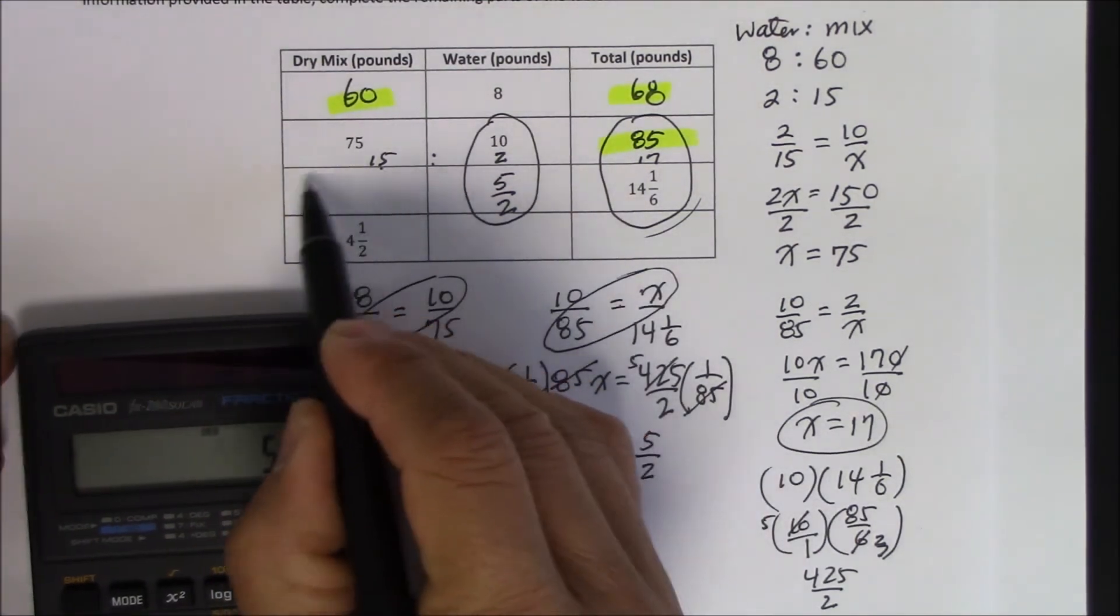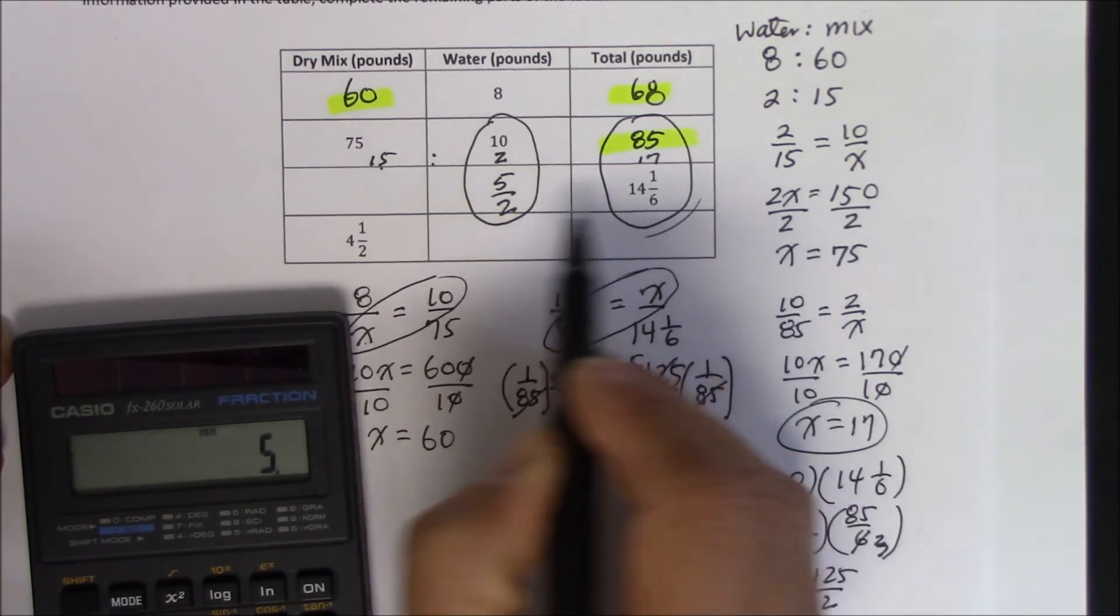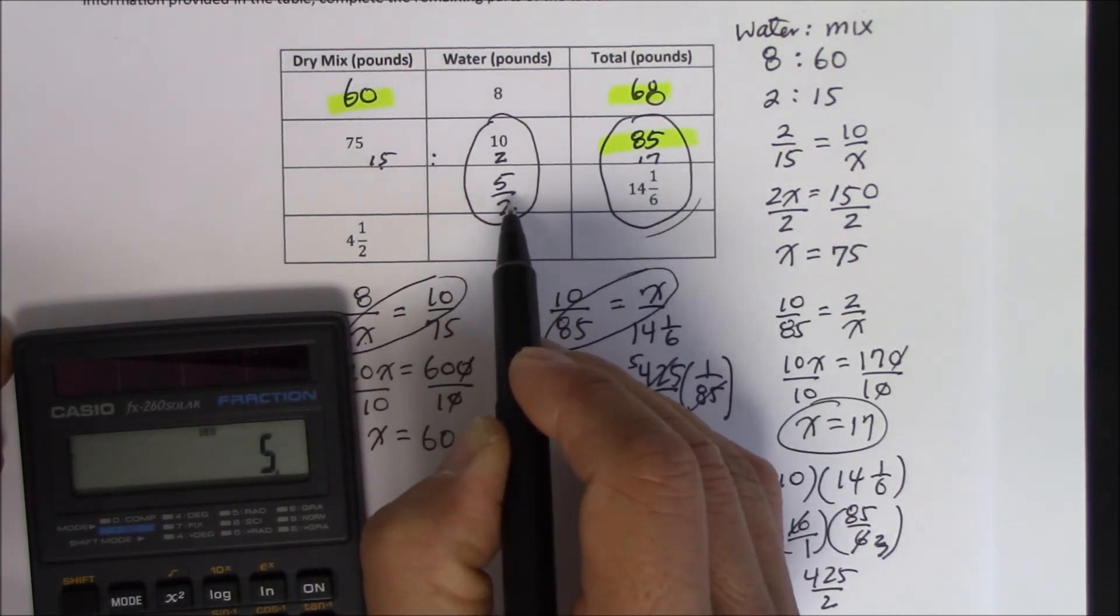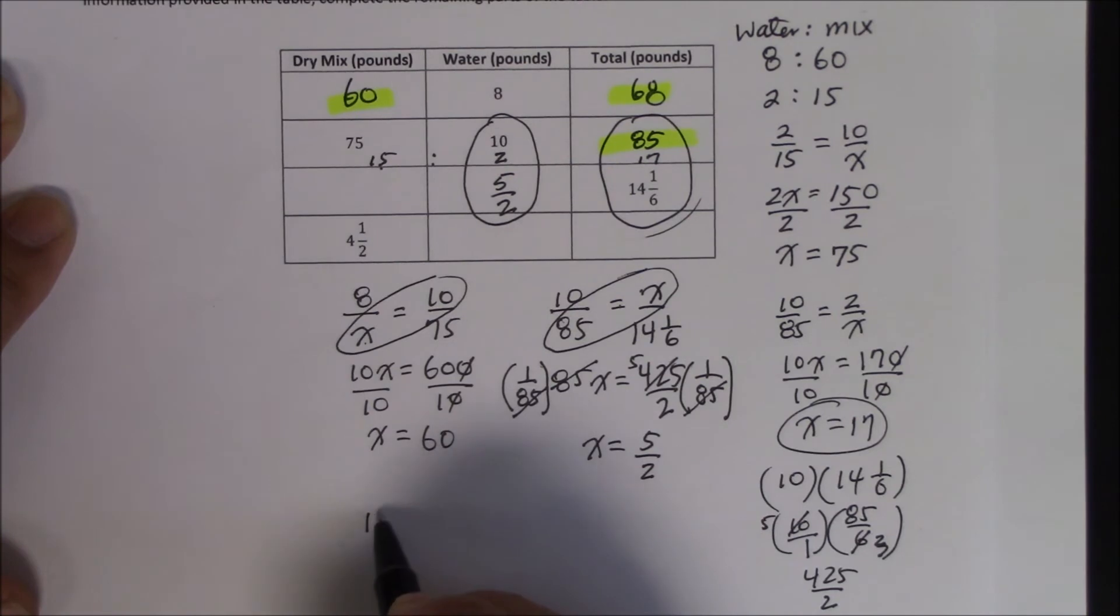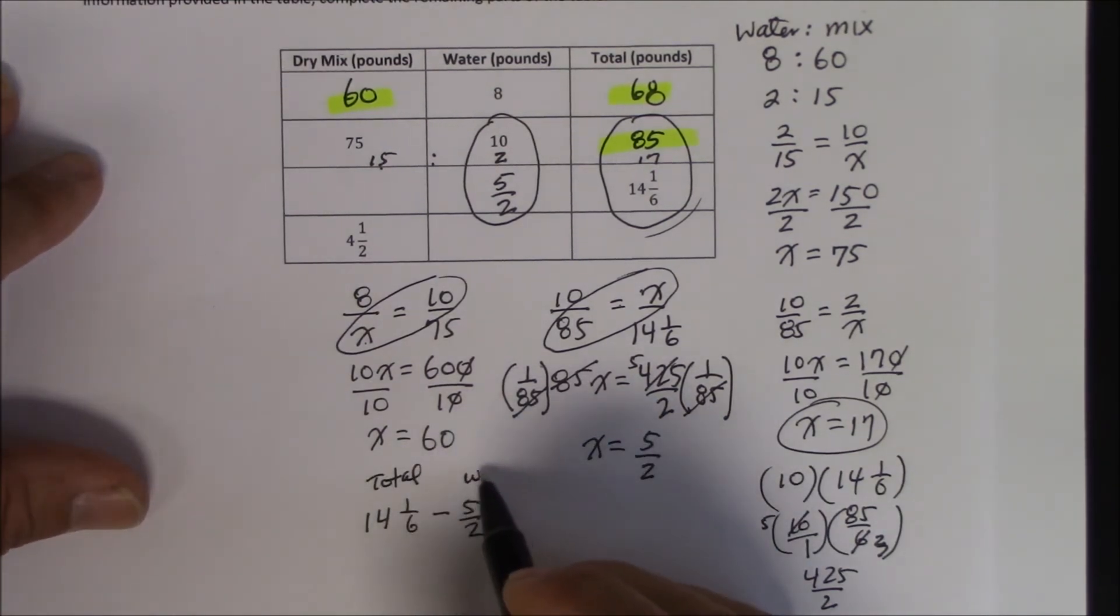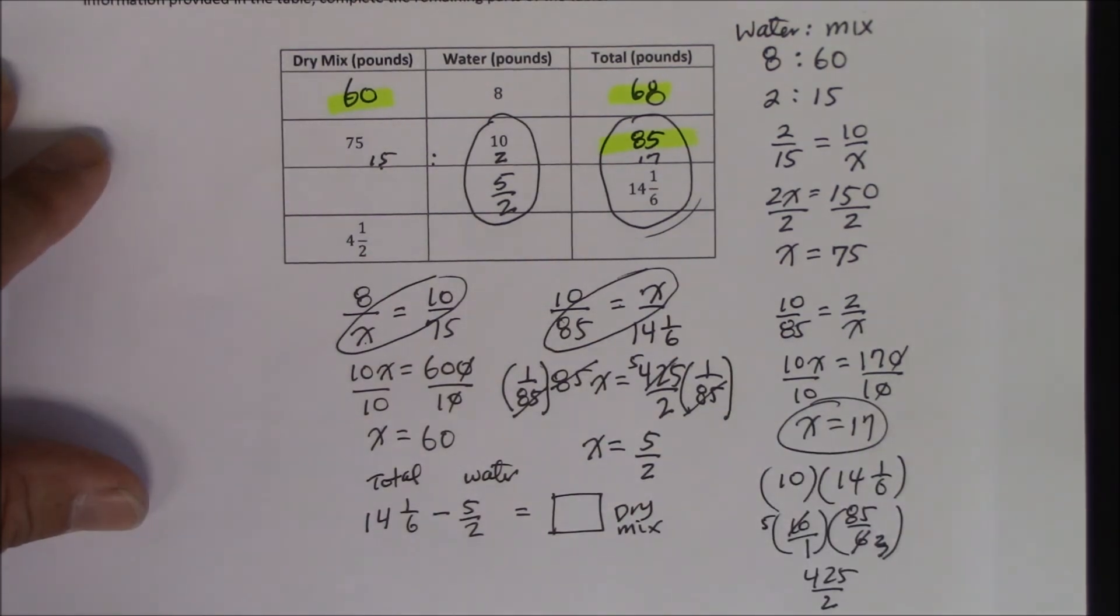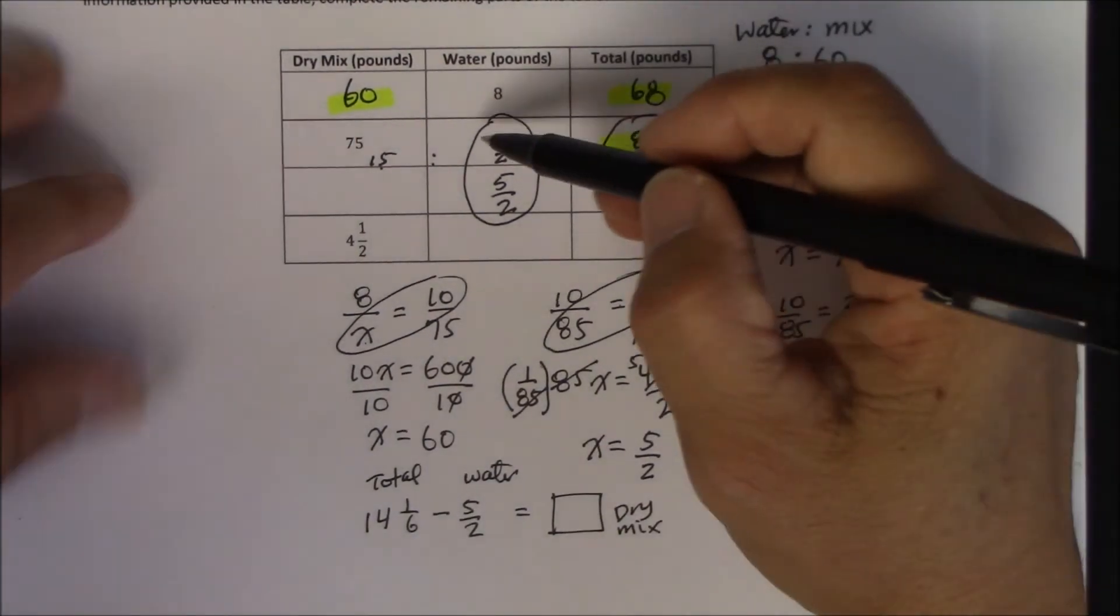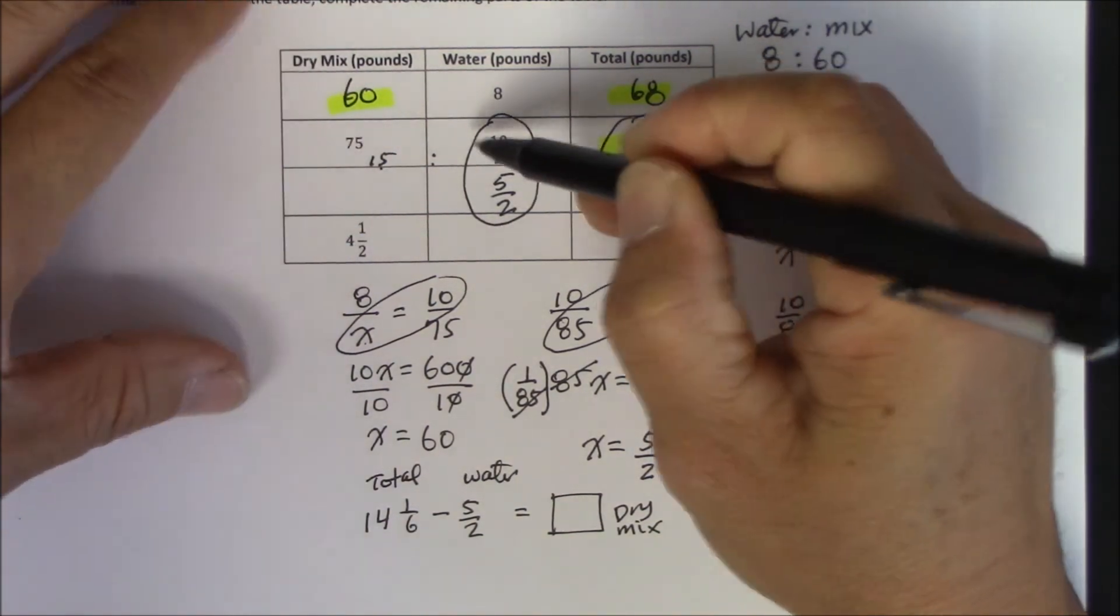Now since I'm going to add the dry mix with the water, which will become this total, all I have to do is subtract it. Is that a proper word? Subtract it? So let's try that. I'm going to go 14 and 1 over 6 minus 5 over 2. This is the total. This is the water. And whatever I get, this will be the dry mix. You see what I'm doing? Otherwise, you could do ratios and proportion here as well. Let that be an x, and you could cross multiply.